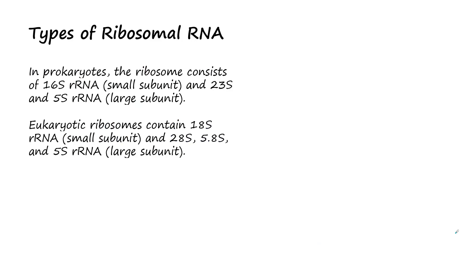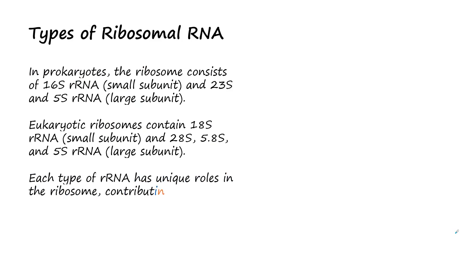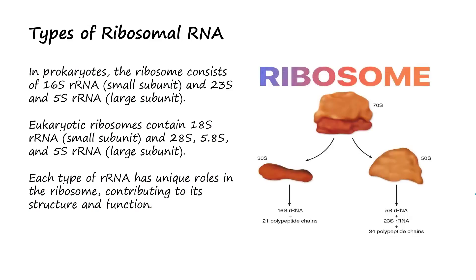In eukaryotes, there are also small and large subunits. The small subunit in eukaryotes consists of 18S ribosomal RNA. The large subunit in eukaryotes comprises 28S, 5.8S, and 5S ribosomal RNA molecules. Each type of ribosomal RNA has a unique role in the ribosome, contributing to its structure and function.